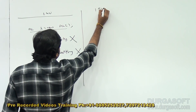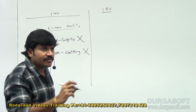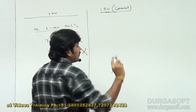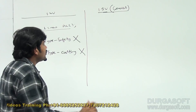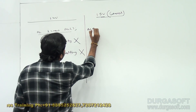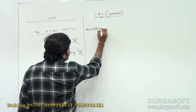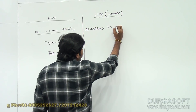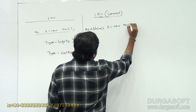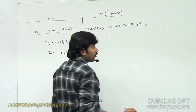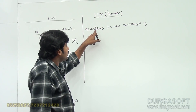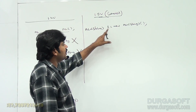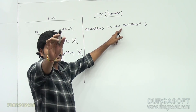Luckily, in Java 1.5, the generics concept came. In generics, to create a generic version of ArrayList, you write: ArrayList<String> l = new ArrayList<String>(). Here, String is the type parameter.